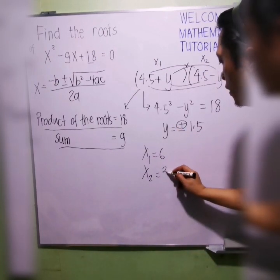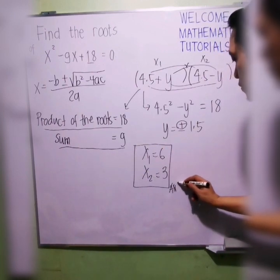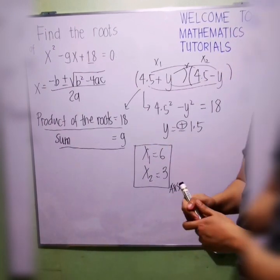X2 is equal to 4.5 minus 1.5. We have 3. These are your two roots. Easy, right?